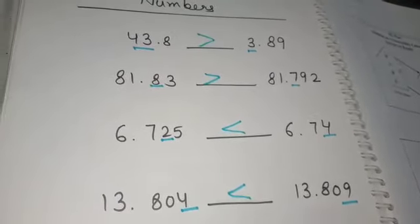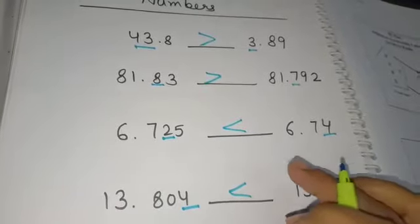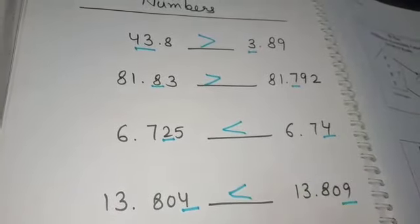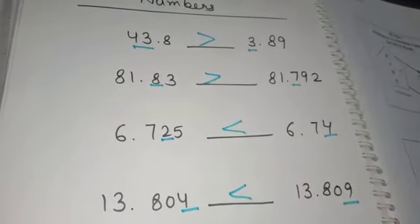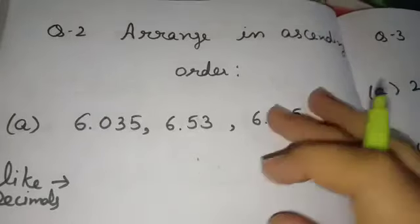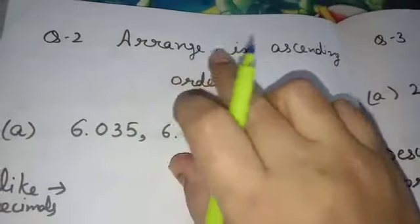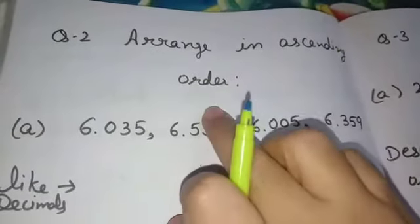With this, we have completed question number 1 of Worksheet 6. Now, question number 2 is: arrange in ascending order.